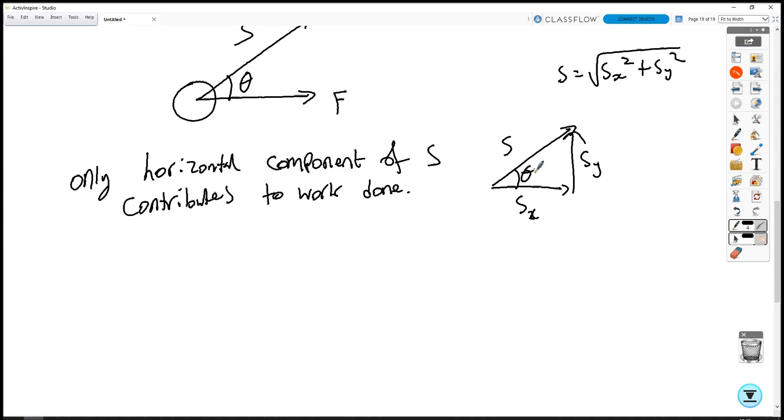So if we draw that as a triangle, if we've got S, some angle, S_y and S_x, where S is equal to the square root of S_x squared plus S_y squared, we're only taking S_x. And we've got angle theta there. S_x is equal to S cos theta. So the work done is equal to F S cos theta. If it were the case of the force being vertical, then obviously we'd have to calculate it differently. And we might end up with F S sine theta, depending on the orientation of everything.